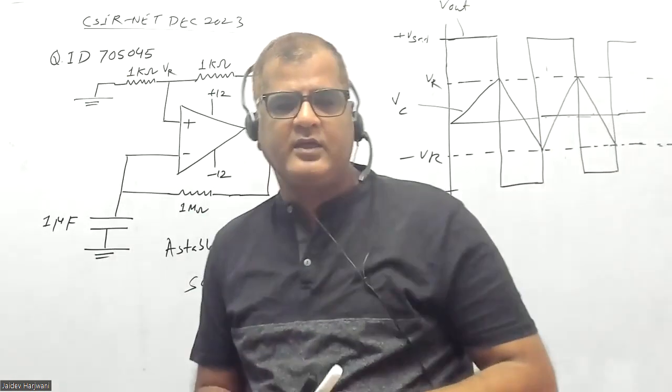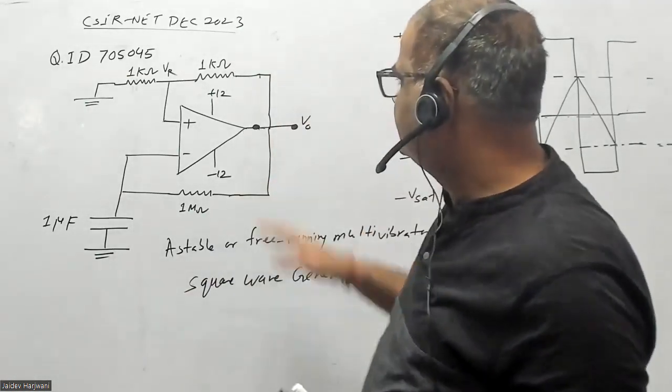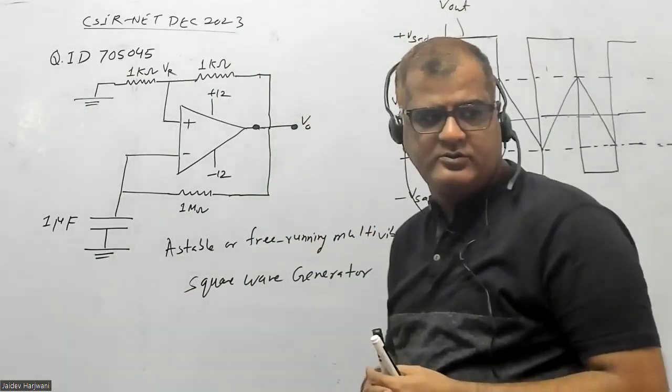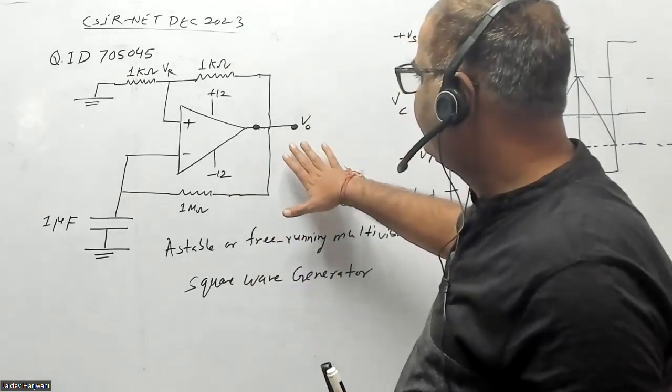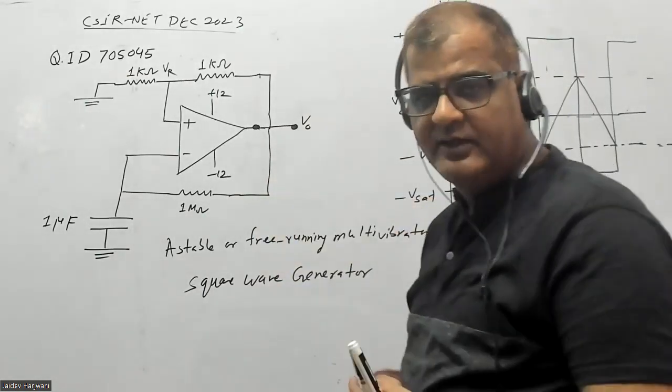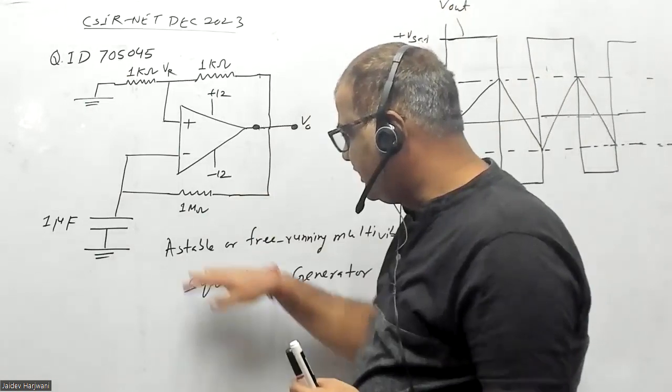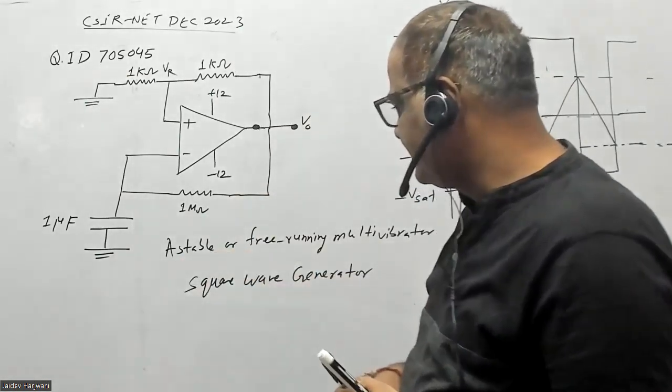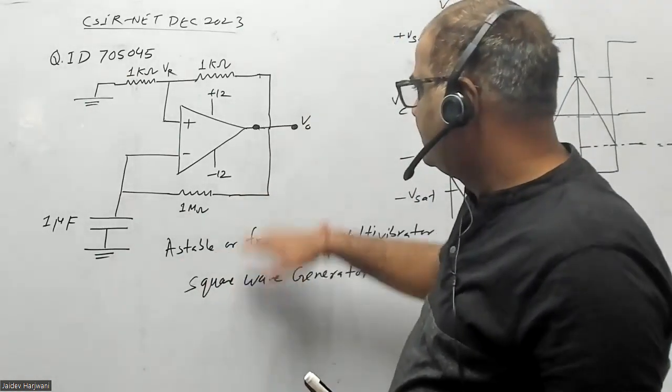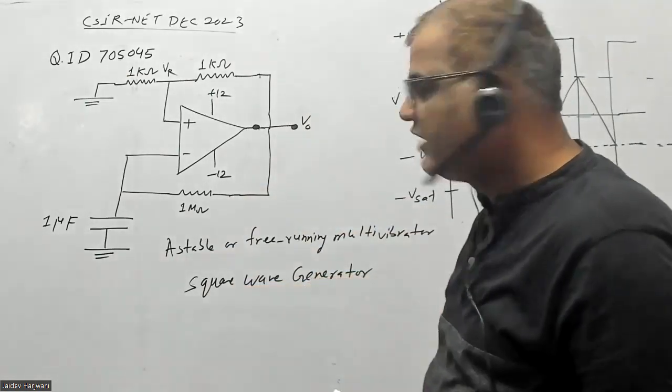Hello students, let us solve this year's CSIR NET question. This question gives you a comparator circuit. We call it an astable multivibrator, or it is capable of generating a square wave.